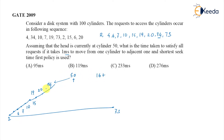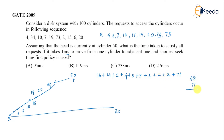The movements are: 50 to 34 is 16, 34 to 20 is 14, 20 to 19 is 1, 19 to 15 is 4, 15 to 10 is 5, 10 to 7 is 3, 7 to 6 is 1, 6 to 4 is 2, 4 to 2 is 2, and 2 to 73 is 71. Adding up: 16+14+1+4+5+3+1+2+2+71 = 119. Since it takes 1 millisecond per cylinder, the answer is 119 milliseconds — answer B.